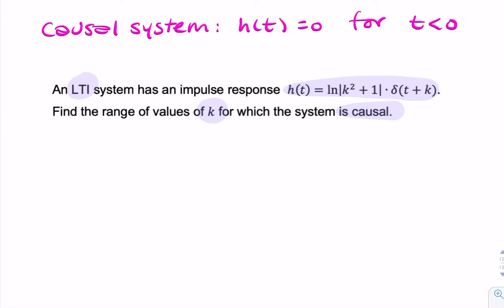So if we try to sketch the impulse response we're given, it looks like we have some scaling factor. It doesn't matter what that is, but that is multiplied by an impulse at t equals minus k.